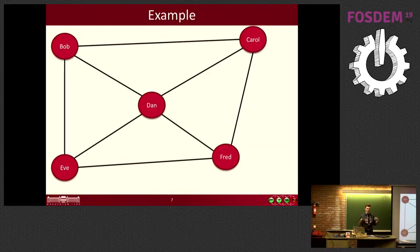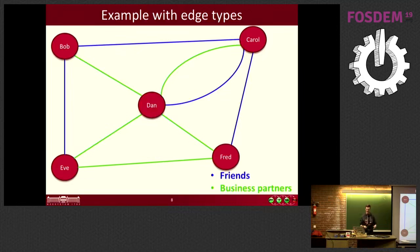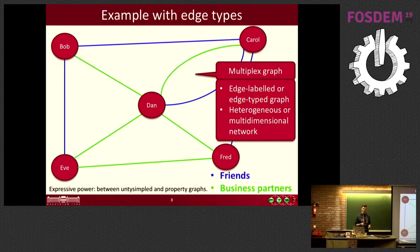Reality is more sophisticated. If we look at multiple relationship types — green lines for business relationships and blue lines for friendships — we can see that Carol is more oriented towards friendship while Dan is more of a business center. This is called a multiplex graph, edge-labeled graph, heterogeneous network, or multidimensional network.